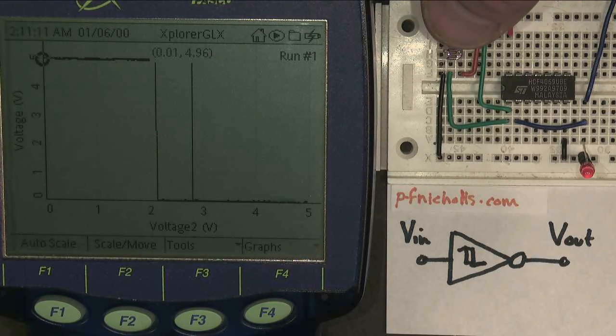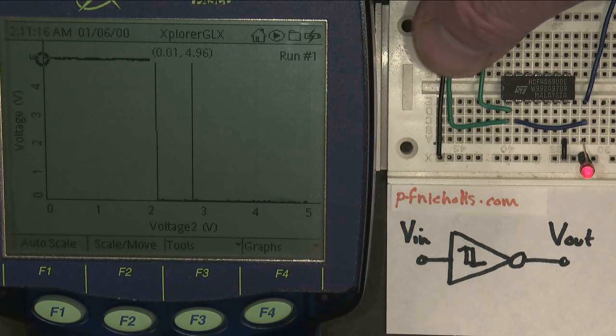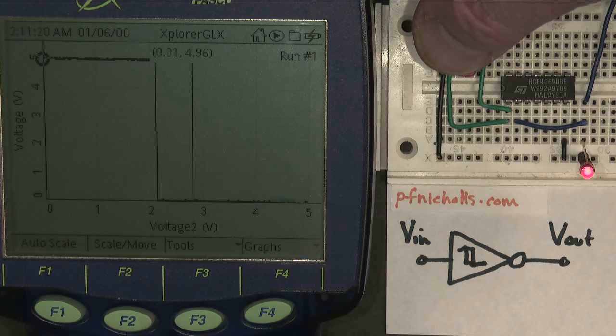And if I make the LDR darker, the resistance goes up, the voltage of the input falls, and what you should notice is that the LED comes on, which is great. We've made a light detector. But the problem is, the LED can be half on.